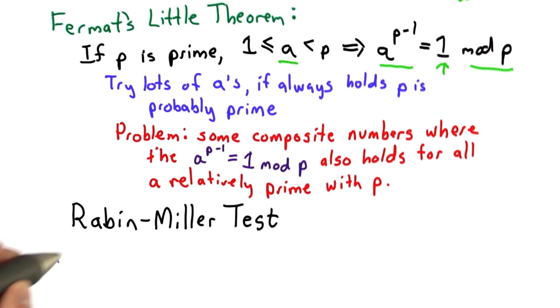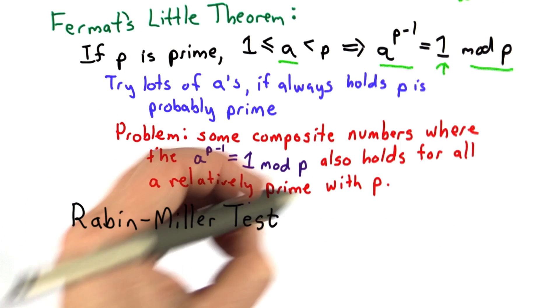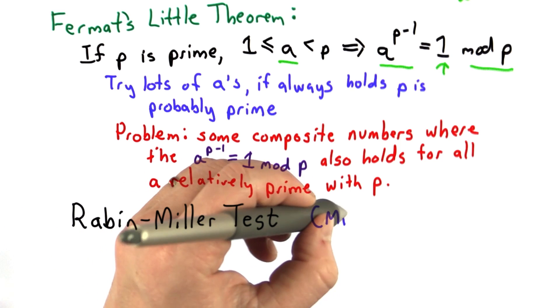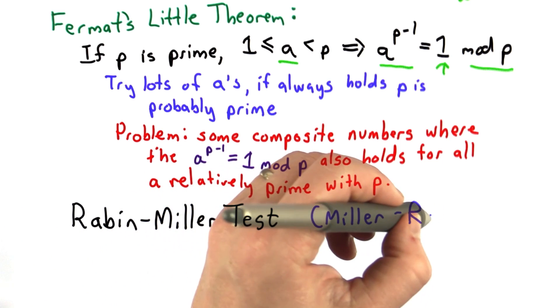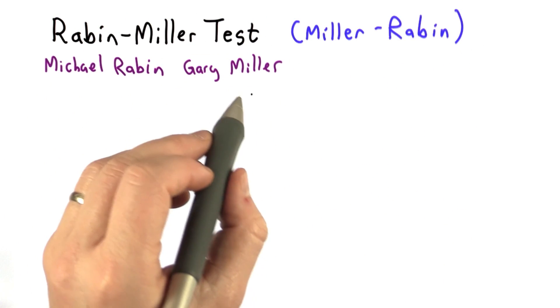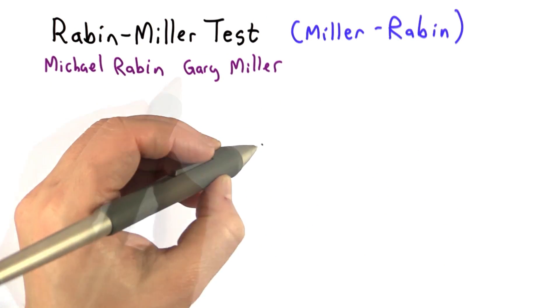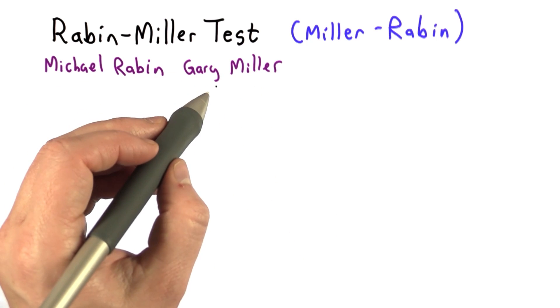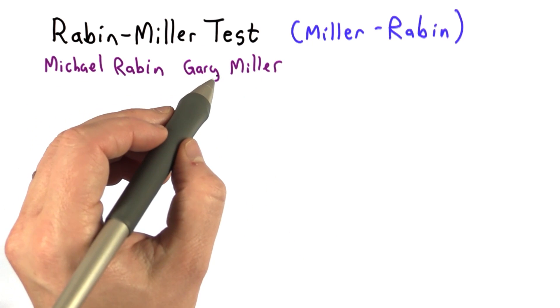The good news is there's a faster test, which is known as the Rabin-Miller test. Sometimes it's known as the Miller-Rabin test. It was discovered independently by both Miller and Rabin. The main idea was originally proposed by Gary Miller in 1976. He provided a deterministic test based on the assumption that the Riemann hypothesis was true.